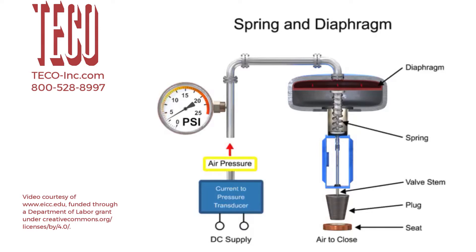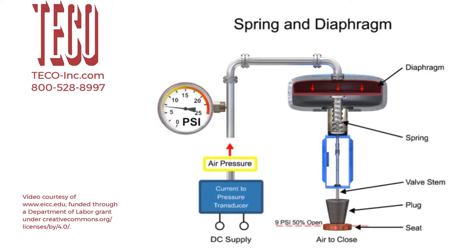For example, a pressure of 9 psi applied to the diaphragm moves the spring and valve stem to 50% of operating range.